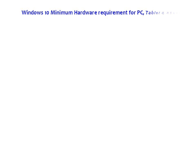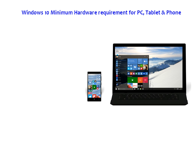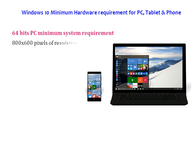Minimum hardware requirements for PC, tablet, and phones. 64-bit PC minimum system requirements: 800x600 pixels of resolution, DirectX 9 graphics, 2GB of RAM.